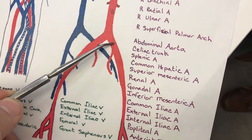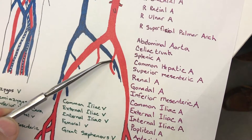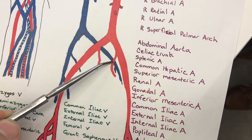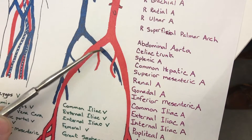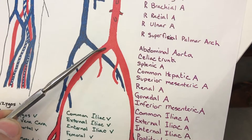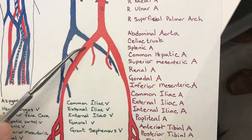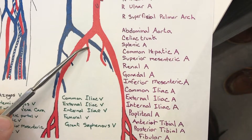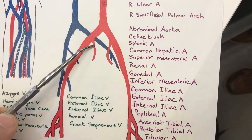This is your left common iliac artery, your left internal iliac artery, and your left external iliac artery. And this is your right common iliac artery, your right external iliac artery, and your right internal iliac artery.